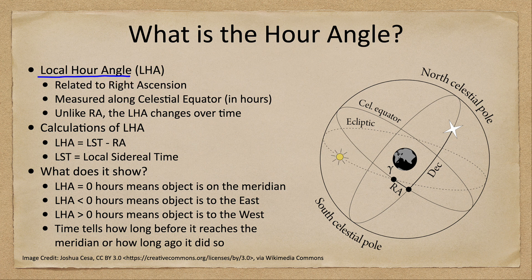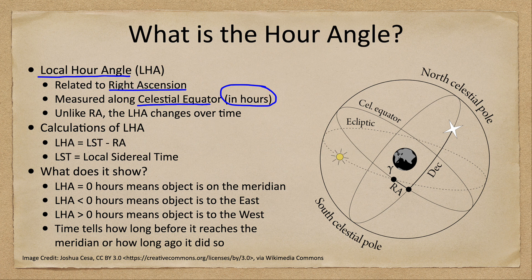The local hour angle is related to the right ascension of a star. If you remember, we had right ascension and declination as two coordinates, as shown in the image here. The declination was how far you were above or below the celestial equator, and the right ascension was measured along the celestial equator from the vernal equinox. The hour angle is also measured along the celestial equator, generally in hours rather than degrees, just like right ascension. The key difference is that right ascension is fixed — the coordinates of the star never change — however, the local hour angle will change over time.